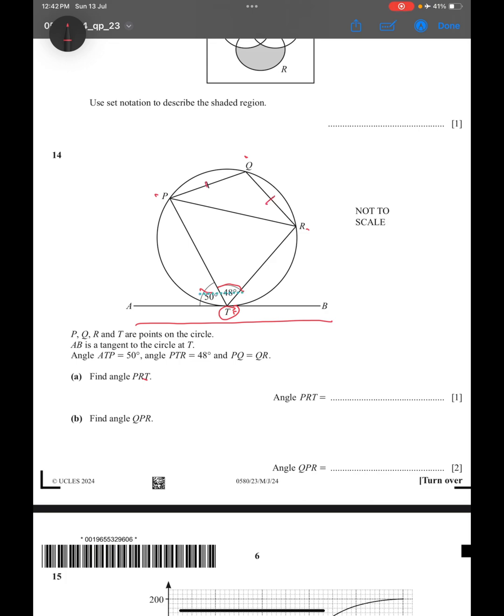For angle PRT, that means this angle, actually this angle. This is 50 degrees, so this angle will also be 50 degrees. Why? Because of the alternate segment theorem. So by the alternate segment theorem, angle PRT will be 50 degrees.